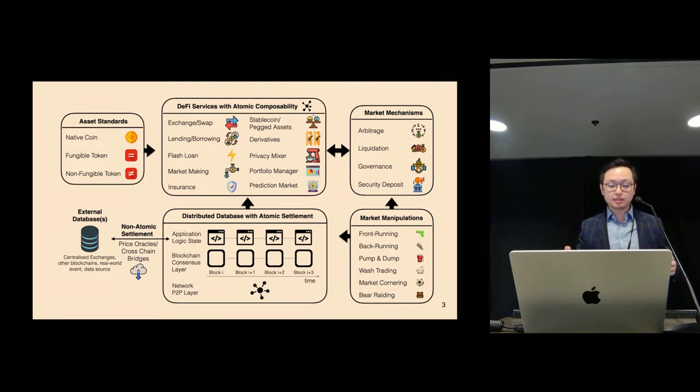All these DeFi services are built upon the blockchain and work with different token standards such as fungible tokens, non-fungible tokens, etc. For DeFi services to function efficiently and effectively, they typically rely on market mechanisms such as arbitrage, liquidation, and so on. These market mechanisms actually lead to market manipulations such as front-running and back-running.